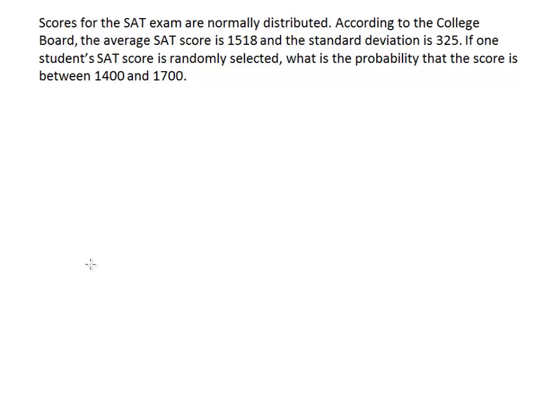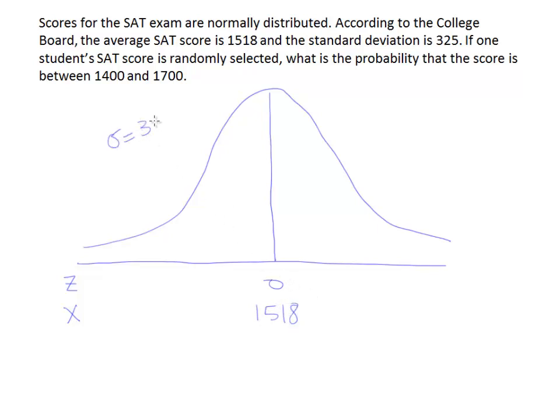Because it says the scores are normally distributed, I'm going to draw a bell curve. I'll label a z-axis at 0 and an x-axis at the mean. The mean is 1518, and I'll have the standard deviation up here in the corner, 325.